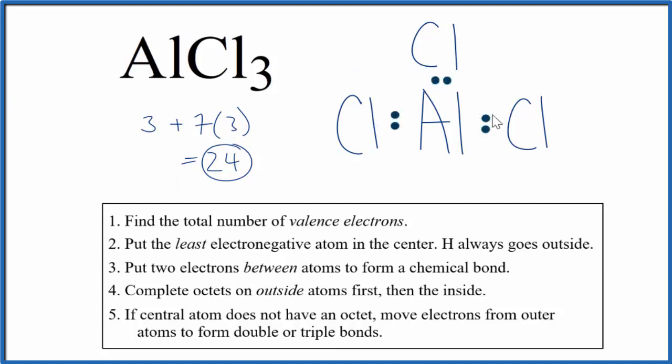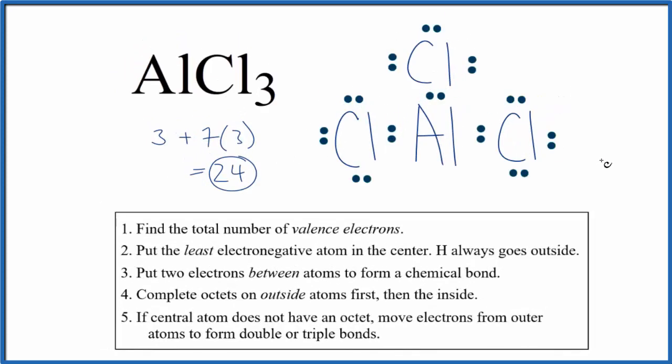At this point, we've used six valence electrons. We have 24. So let's complete the octets on each chlorine atom. So at this point, we've used all 24 valence electrons.